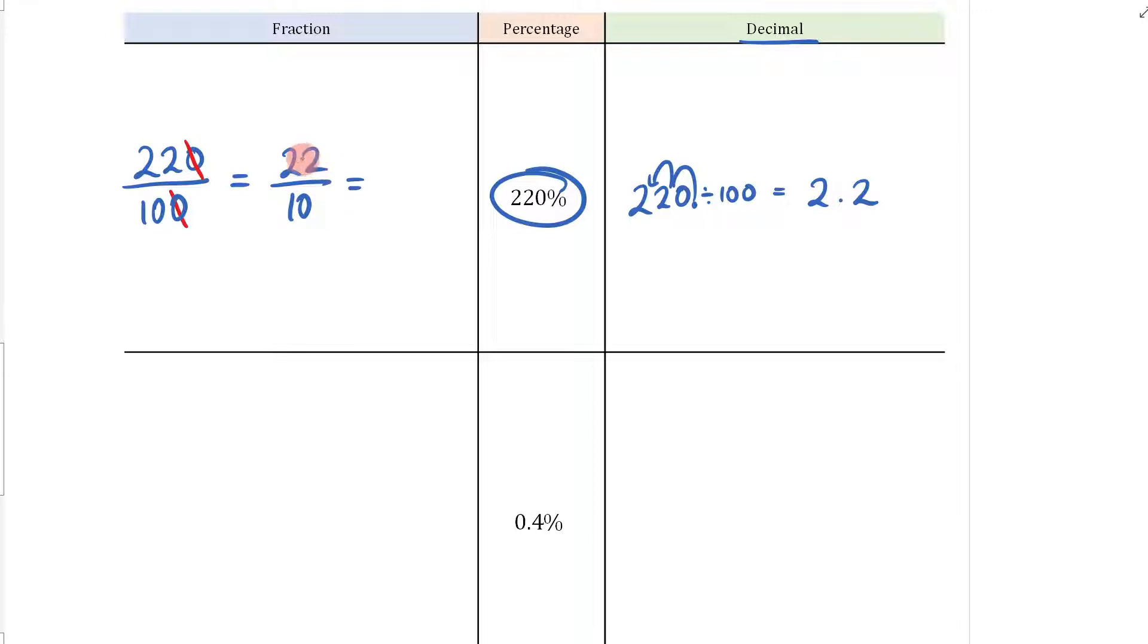How many times does 10 go into 22? This is where I want to write it as a mixed number. 10 goes into 22 twice with 2 left over. This can be simplified to become 2 and 1/5. So that's my answer, 2 and 1/5.